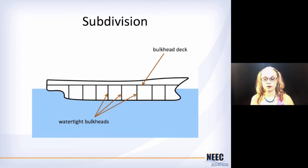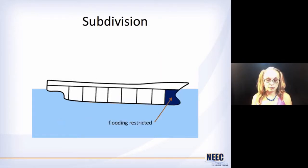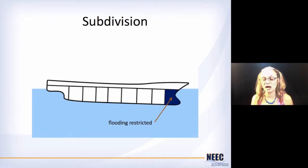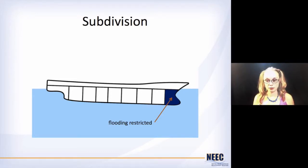Recall from one of our previous videos that we were talking about subdivision. Subdivision is just when you take the hull of your ship and you break it apart into pieces, into compartments. The reason being is that in case something happens to your ship and one of these compartments floods, you can restrict it to just that one compartment, or maybe the one next to it if you actually managed to take out a bulkhead. This means you can restrict the flooding, and then hopefully that gives your people time to get off the ship onto lifeboats or onto another ship, and hopefully keep the ship upright, safe and stable.